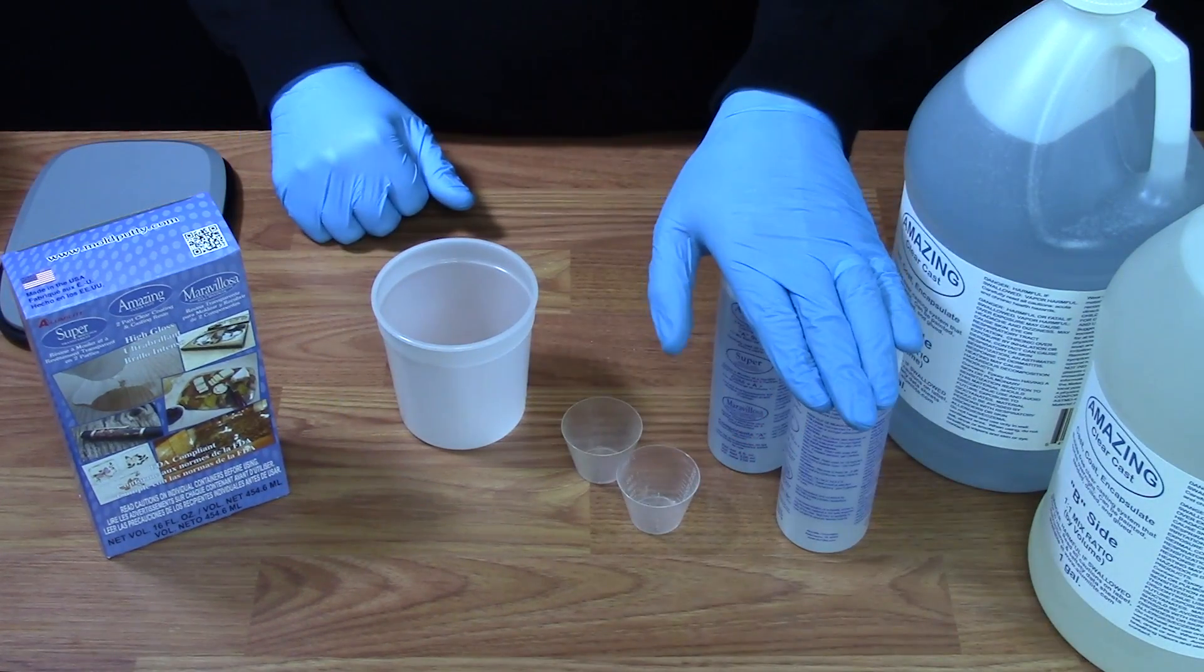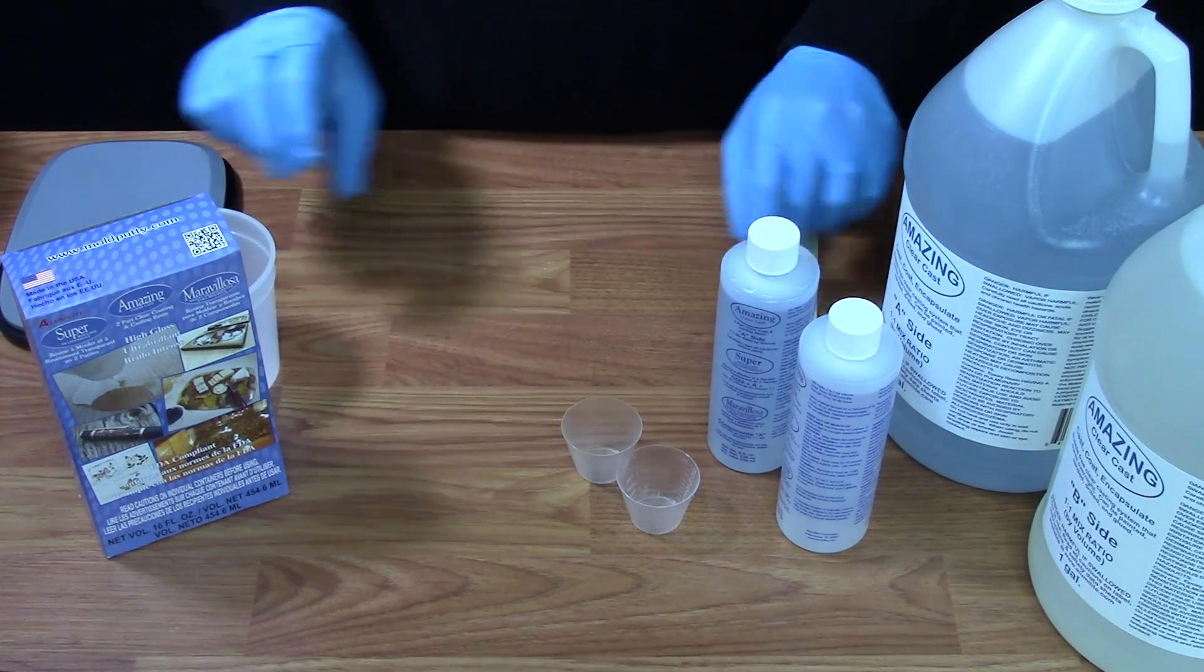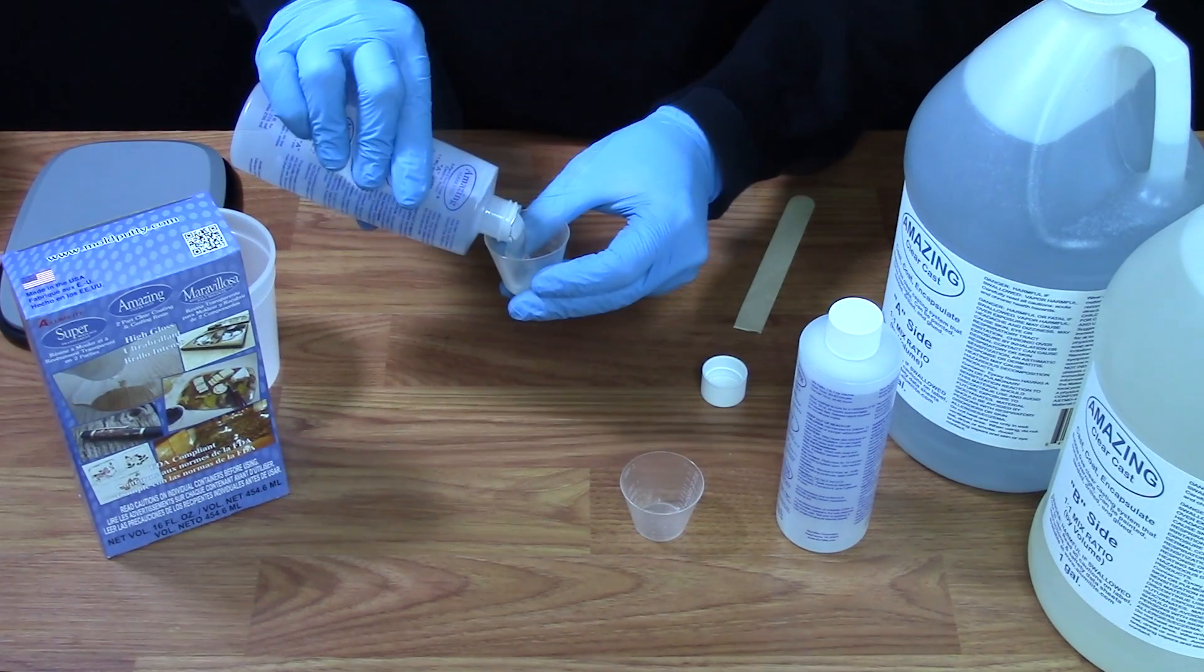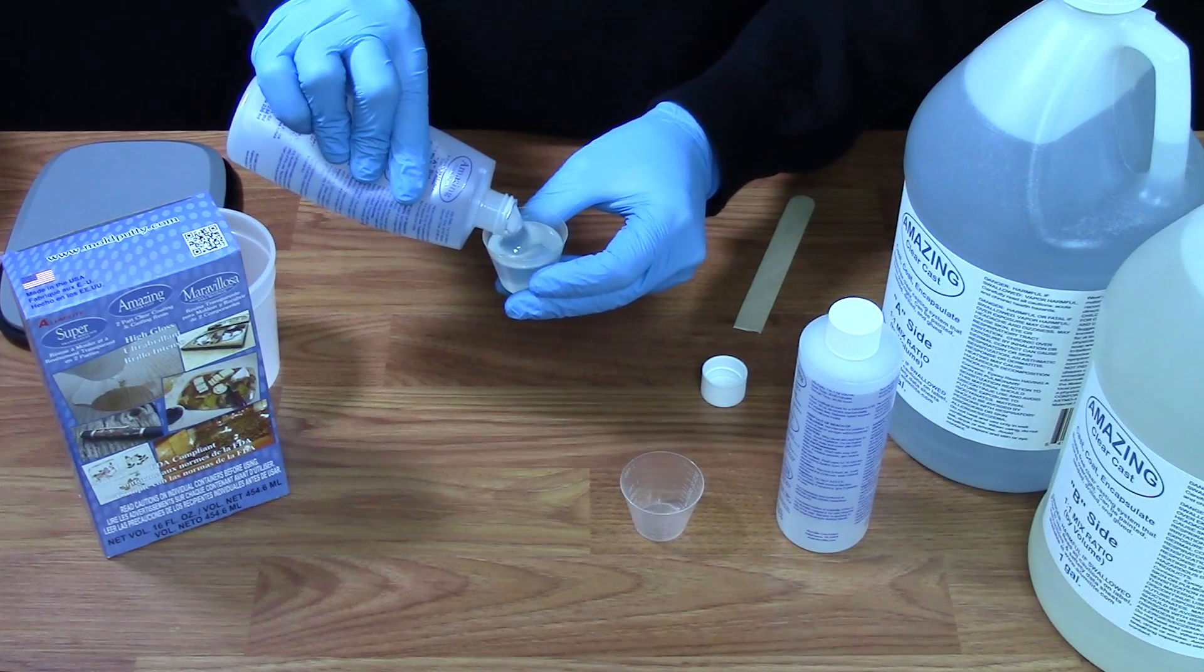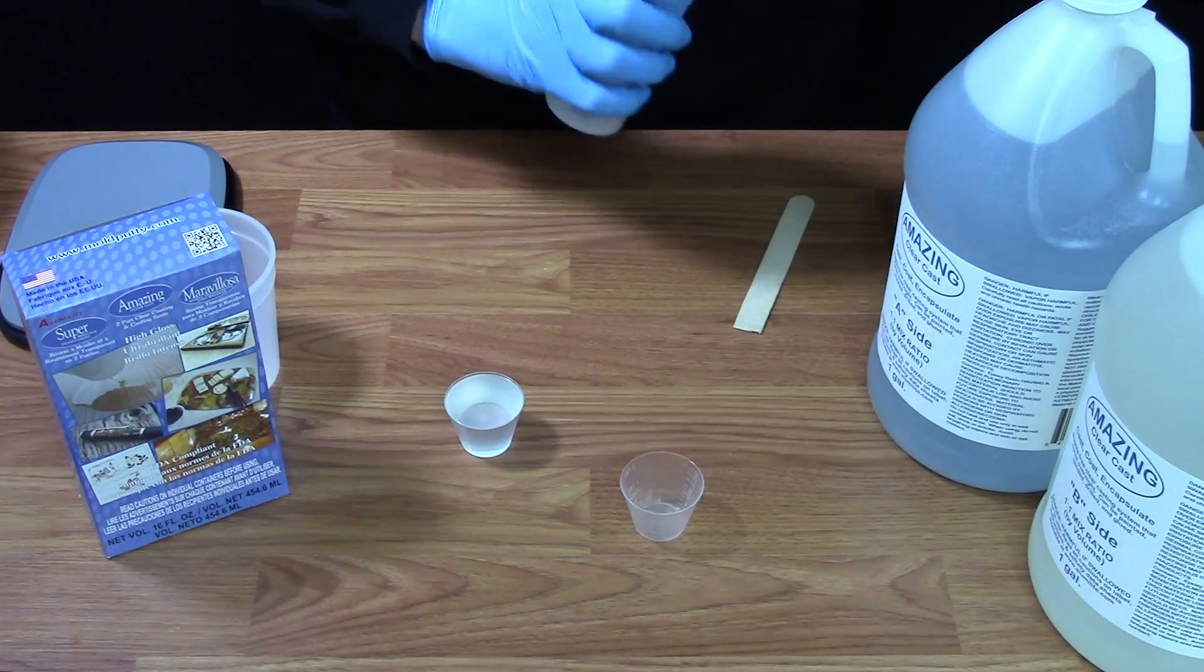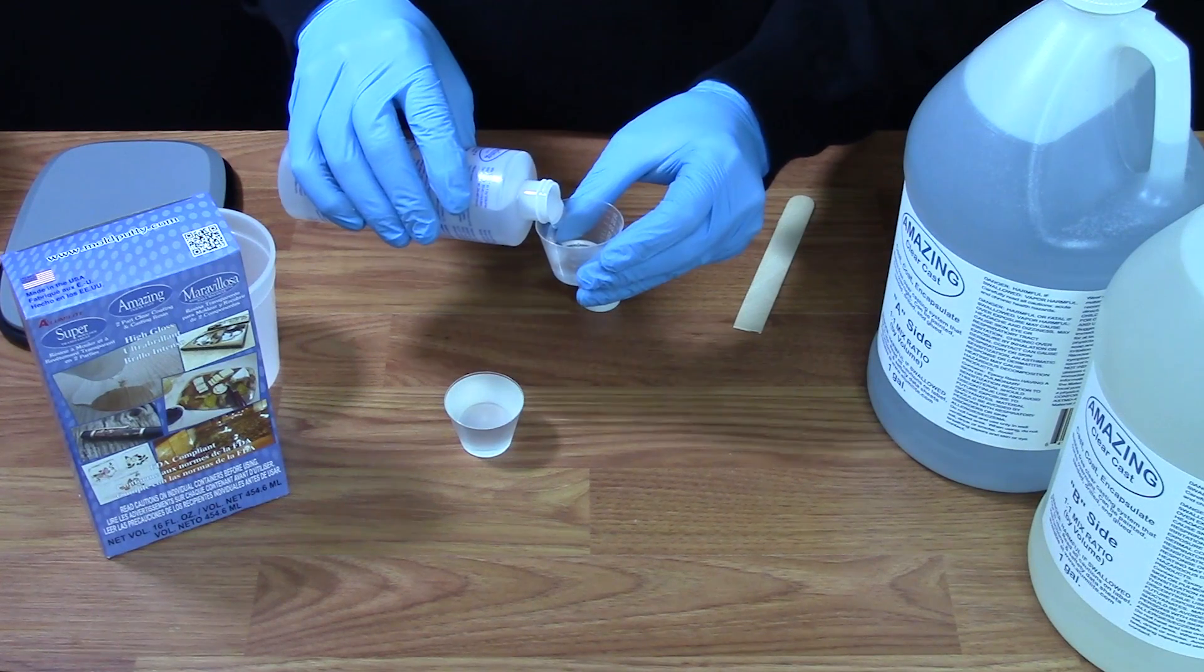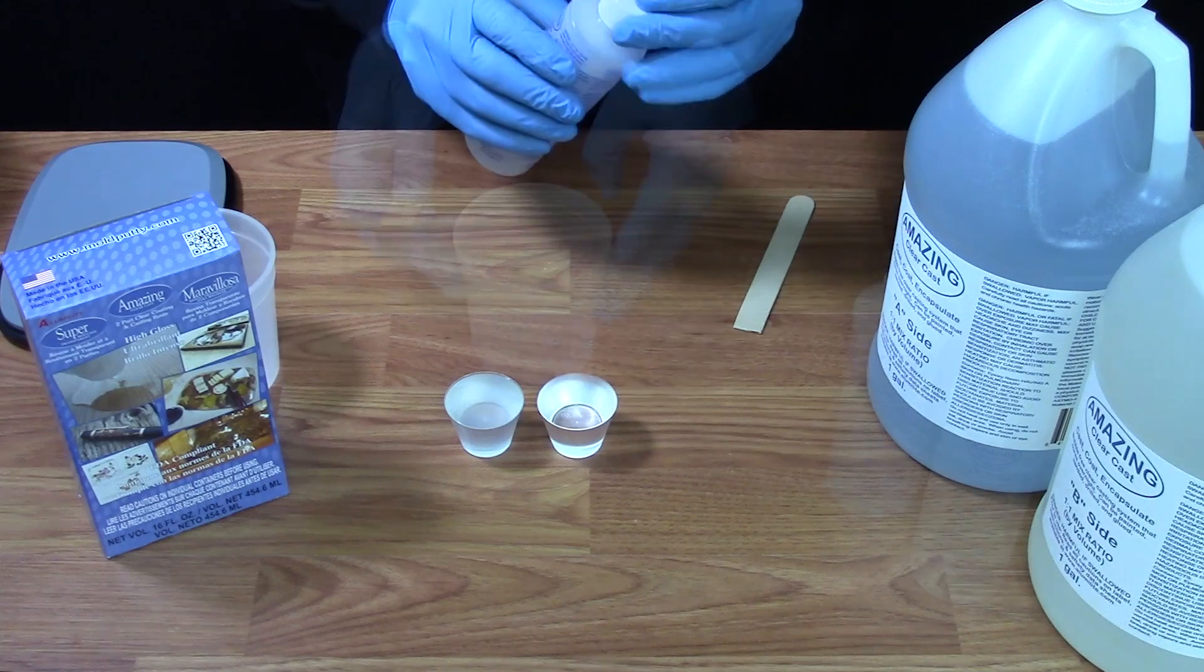When using our smaller kit, our 16 ounce kit, we do provide two small measuring cups for you to measure each side out. Slowly measure out each side until you have equal amounts.